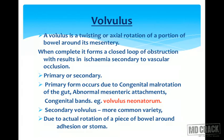Volvulus is a twisting or axial rotation of a portion of the bowel around its mesentery. When complete, it forms a closed loop obstruction which results in ischemia secondary to vascular occlusion. It can be primary or secondary. Primary form occurs due to congenital malrotation of the gut, abnormal mesenteric attachments, and congenital bands — for example, volvulus neonatorum. Secondary volvulus is more common and occurs due to actual rotation of the bowel around adhesions or a stoma.